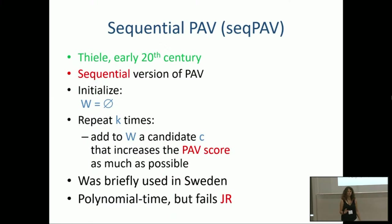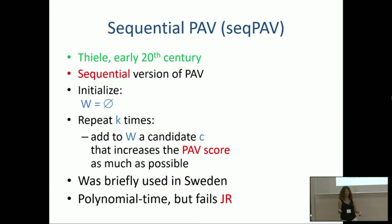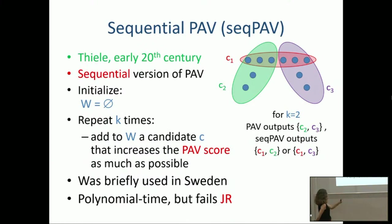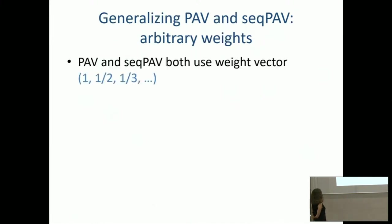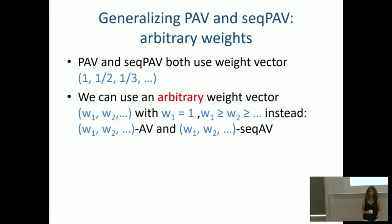One more idea: instead of PAV weights 1, 1/2, 1/3, …, why not try arbitrary non-increasing weight vectors? Maybe sequential PAV failed with harmonic weights, but some other weights could recover JR or even EJR while being polynomial time. So we tried arbitrary non-increasing weight vectors, normalized so the first weight is 1. The special case 1, 0, 0, 0, … in the optimization version means each voter cares only about being represented once — maximum coverage. The sequential version of that is exactly our good old friend, greedy approval voting, giving us hope since greedy satisfies JR.